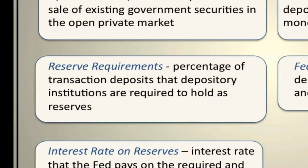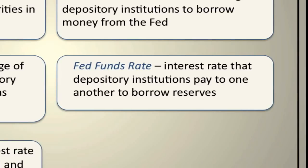The next tool the Federal Reserve has at its disposal is the Fed Funds Rate. The Fed Funds Rate is the interest rate that banks or depository institutions pay to one another to borrow reserves. Each bank holds reserves — some physically on hand, and some in an account with their Federal Reserve Bank. If banks need access to funds relatively quickly, they can borrow from one another. This is done fairly easily, usually overnight, so that banks have liquidity to meet withdrawal demands.